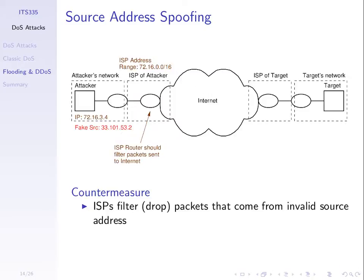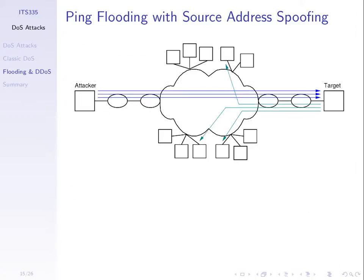With a fake source address, the attacker sends the ping messages with the fake source set such that: A, the target doesn't know where they came from — to hide; and B, the traffic doesn't all come back to the attacker and overflow the attacker's link, so it goes to others. The attacker sends a message, the target receives and replies to others.